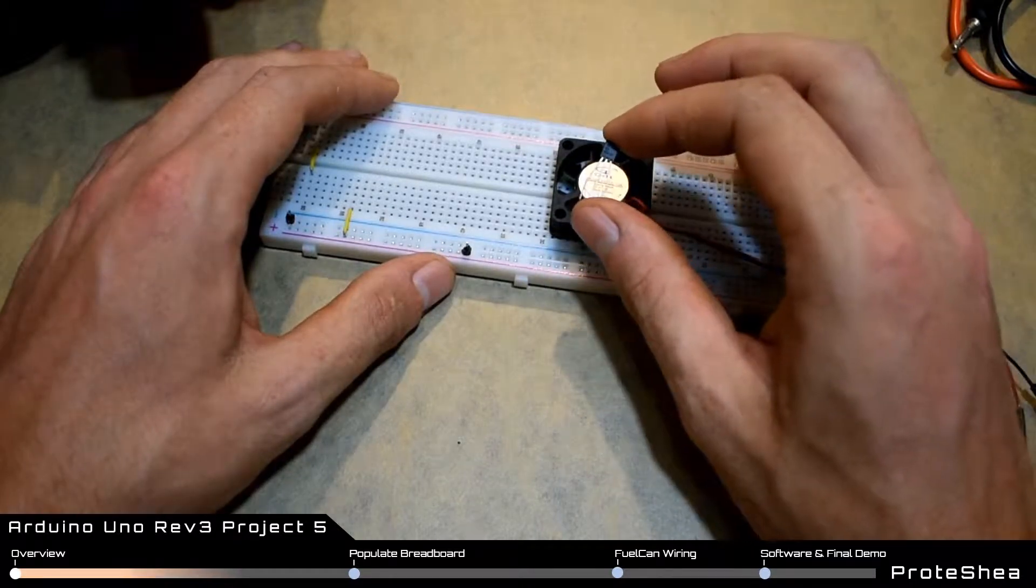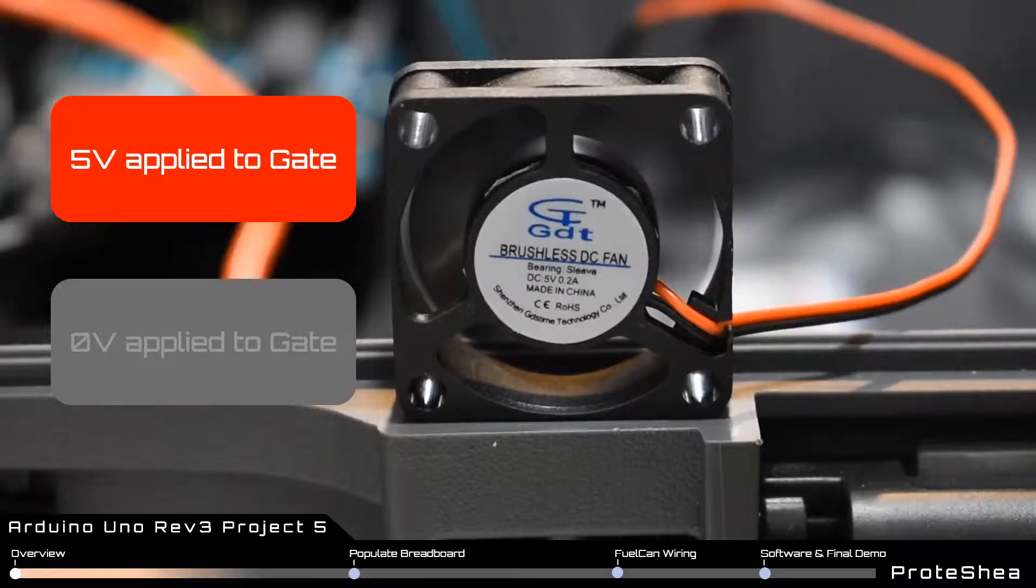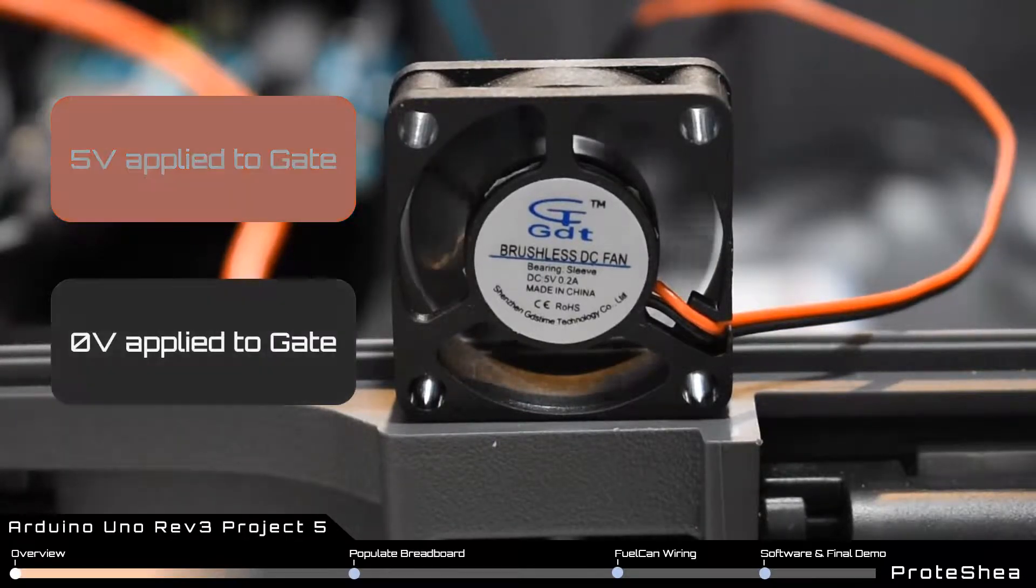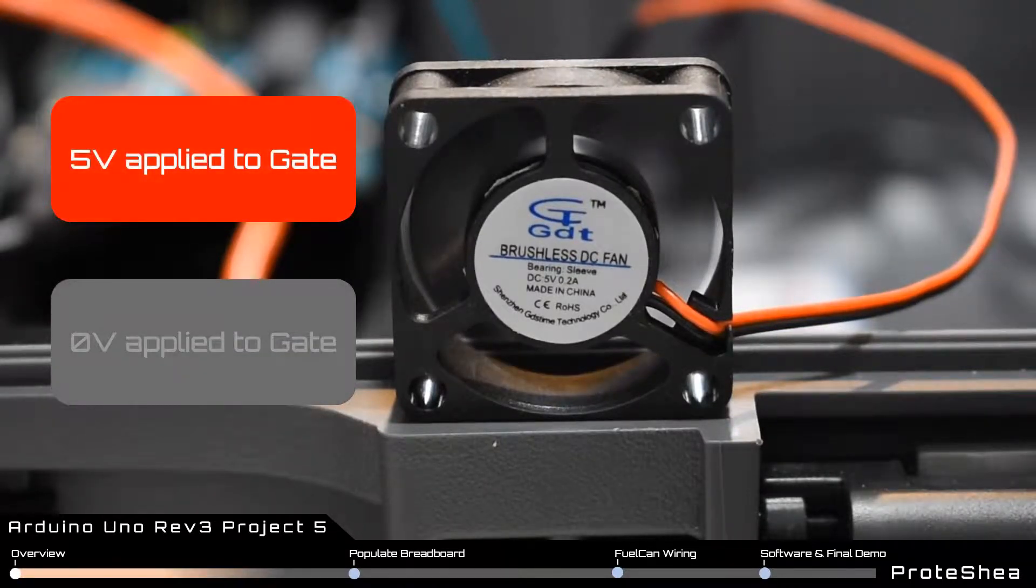When we supply five volts to the gate of the n-channel MOSFET, the drain-source channel becomes less resistive and it completes the circuit from the positive five volts that we're powering the fan from to ground.